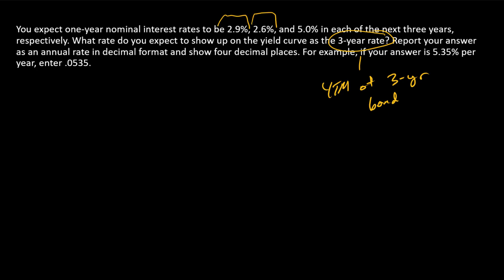We have expected nominal rates of 2.9% in the first year, 2.6% in the second year, and 5.0% in the third year. For this three-year investment problem, we'll leave compounding at an annual frequency to keep things simple, investing at 2.9% in year one.